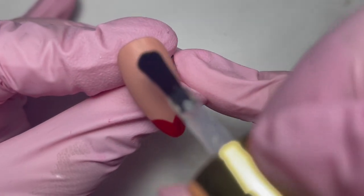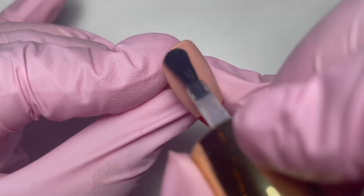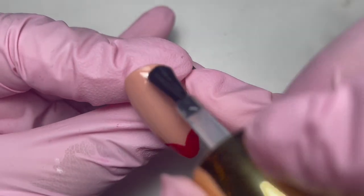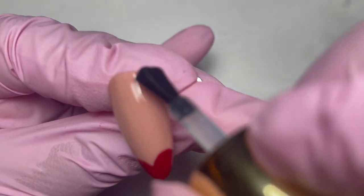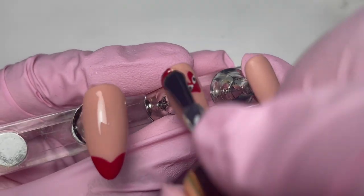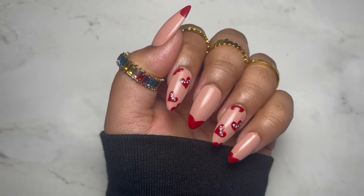Once you've cured all of that then you go ahead with your top coat. I'm using a no wipe top coat here and I just go over the whole surface of the nail, cure for 60 seconds and then that is your set complete. I really hope you enjoyed this set. Thank you so much for joining us and I hope to see you again soon. Make sure you like, comment, share and subscribe. Bye bye.